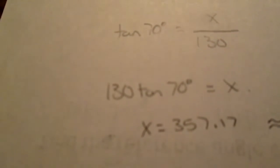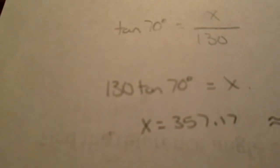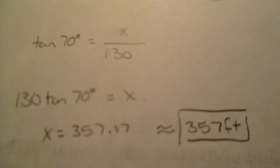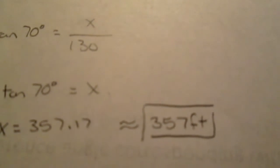X is equal to 357.17, which you're supposed to round to the nearest foot. So approximately 357 feet high.